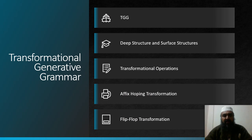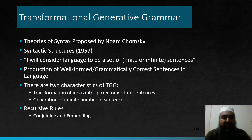Dear students, there are five sections of our today's e-lecture on Transformational Generative Grammar. The first is the nature of Transformational Generative Grammar. The second is deep structure and surface structures. Third is Transformational Operations. Fourth is Affix-hopping transformation or Affix-hopping movement. And the fifth is flip-flop transformation or flip-flop movement.